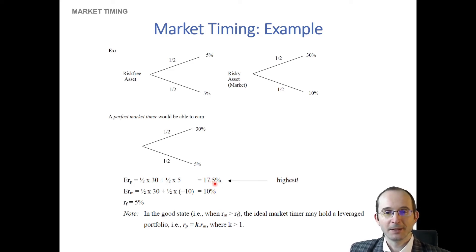And indeed, 17.5% might not even be the limit. Because, for example, if the market timer knows that the state of the world is going to be good, they can even hold a levered portfolio in the risky asset. In other words, they could borrow at the risk-free rate and invest even more in the risky asset, potentially earning some multiple of the 30% good state payoff.